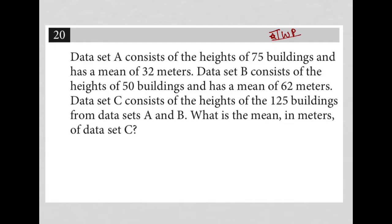The first sentence here says data set A consists of the heights of 75 buildings and has a mean of 32 meters. So I'm going to write that down as A. I'm going to put just 75 in parentheses here to represent that there are 75 data points, and I'm going to write down that the mean equals 32.